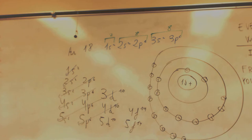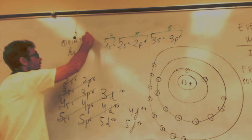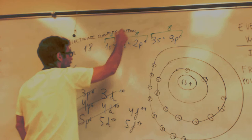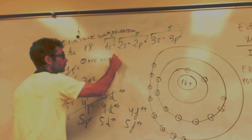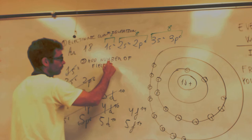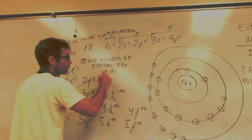And that's the Bohr model for argon. Okay? Is it easier or not? One more thing. You have to write first electronic configuration. Second, add number of electrons per level.